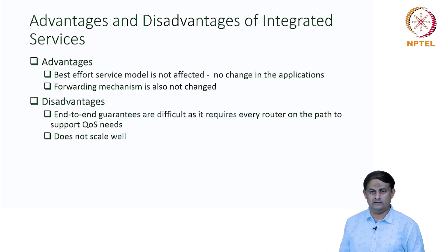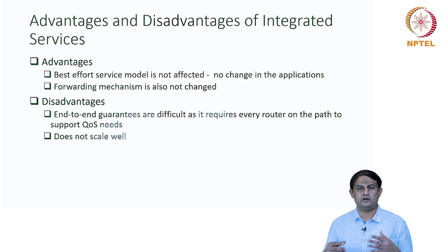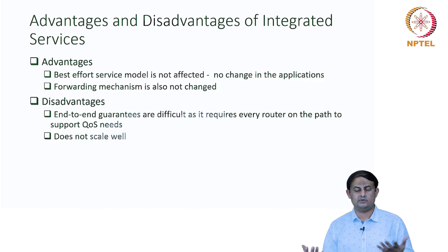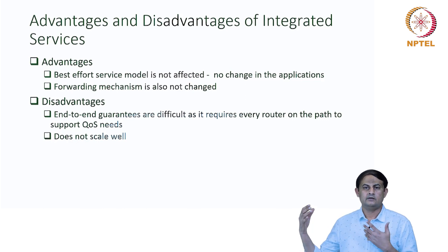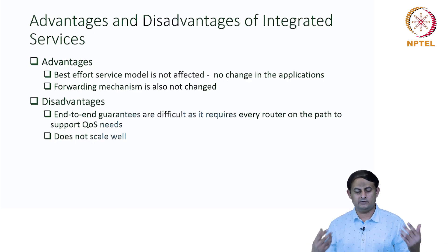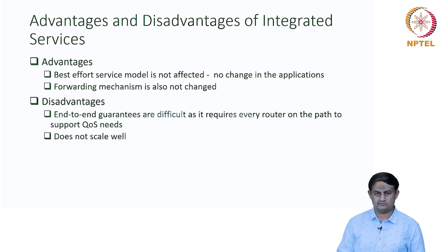Providing explicit reservation for a very large number of parallel conversations becomes cumbersome, which is why it does not scale well. There are alternative models for meeting such requirements when there are massive numbers of parallel conversations — where quality of service can be provided without doing explicit reservations. We will see those in subsequent lectures.